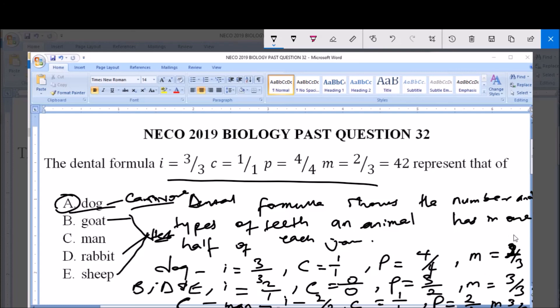Therefore, the answer to this question is dog. Dog is the animal with this dental formula, carnivores with this dental formula. Thank you and God bless you, and subscribe to our channel for more videos and past questions.